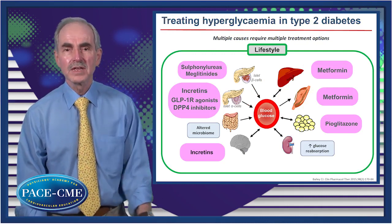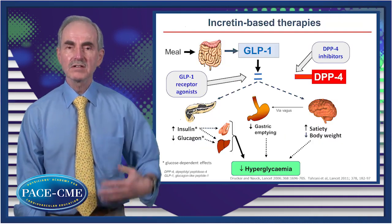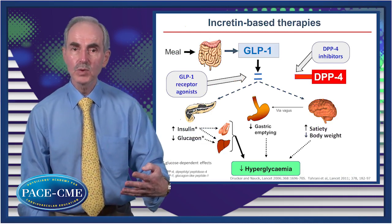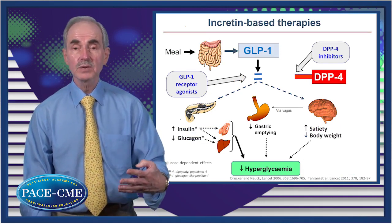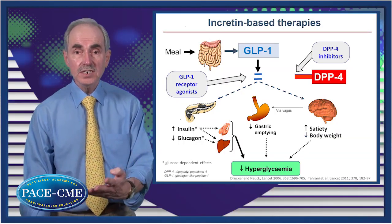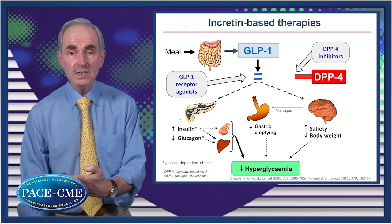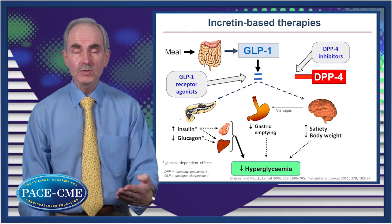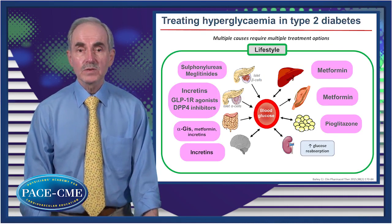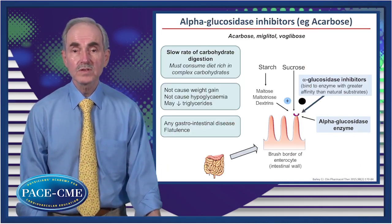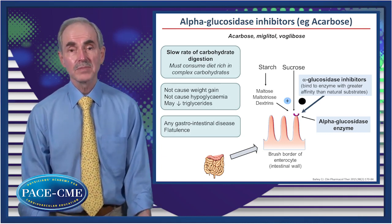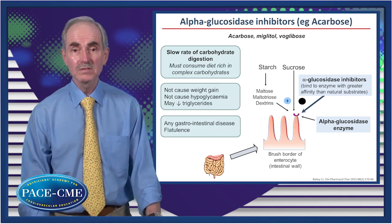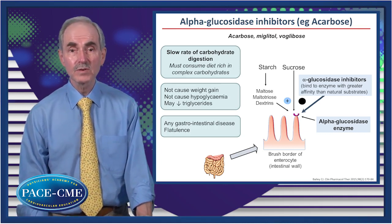Then we have the incretins. The oral ones are the DPP-4 inhibitors, which prolong the life of endogenous GLP-1 to increase the incretin effect. Or we can use GLP-1 receptor agonists, which are injected agents able to not only enhance glucose-induced insulin secretion but also suppress glucagon production. Additionally, they have neural effects to promote satiety — helping their weight-loss element — and delay gastric emptying. We also have alpha-glucosidase inhibitors like acarbose, which slow down the digestion of complex carbohydrate in the intestine, providing another option for slowing postprandial glucose excursions. Metformin and incretins are also acting on the intestine.